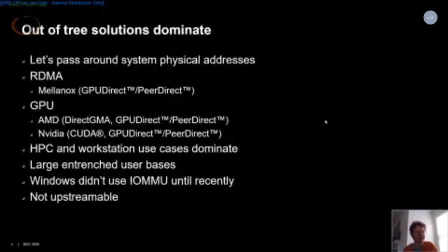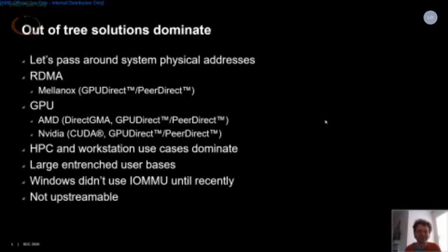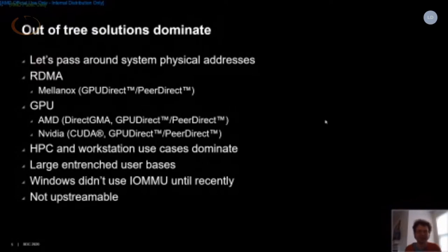Linux didn't have upstream solutions until recently, so a lot of other solutions filled the void. They tended to be proprietary and not really upstreamable. It often fell down to passing around system physical addresses as the lowest common denominator and most expeditious route. There are a bunch of existing APIs out there — GPUDirect and PeerDirect stuff from Mellanox and NVIDIA, and the DirectGMA stuff from AMD.